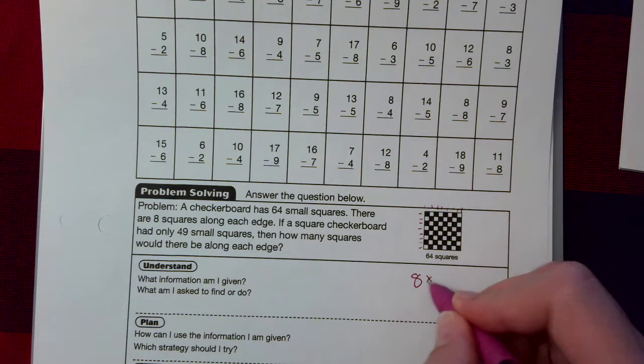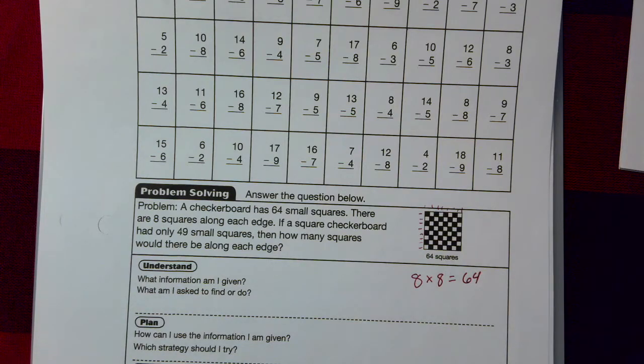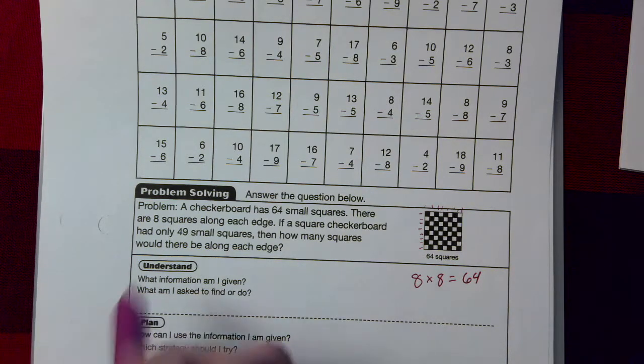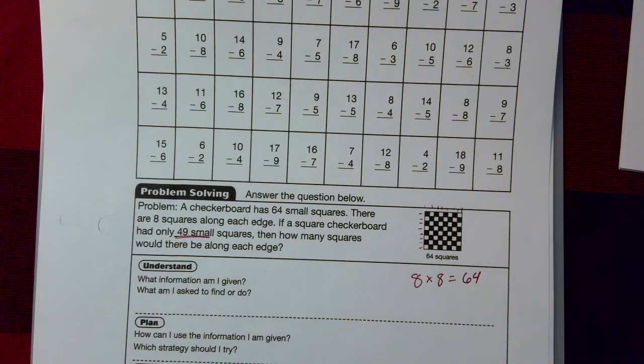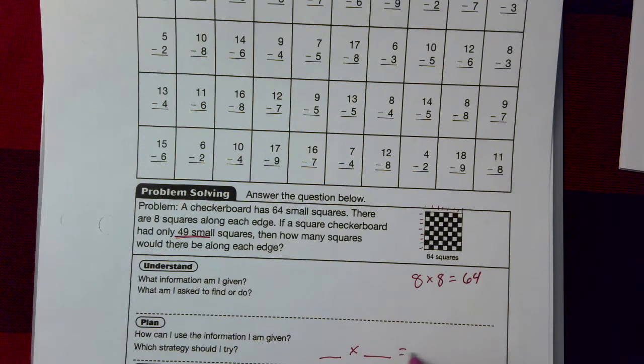Makes sense, because 8 times 8 equals 64. If a square checkerboard had only 49 small squares, then how many squares would there be along each edge? Think about which number times itself equals 49, and then that'll be your answer. Blank small squares.